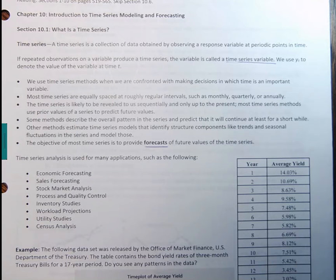And then time series are likely to be revealed to us sequentially and only up to the present. So in other words, a lot of times with time series, we're actually going to use them to predict future values. So previously, we talked about how we don't want to extrapolate. This is kind of the exception to that rule. In time series, our goal is actually to extrapolate, to look into the future what's happening. But we're going to have to make sure we do that in a very reasonable way. And so there are some methods to describe the overall pattern in the series. And essentially what time series do is they look at that overall pattern and they predict what's going to happen in the future based off of that pattern, but only for a short time period after we've collected the data.